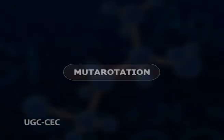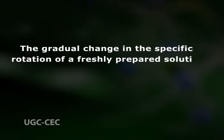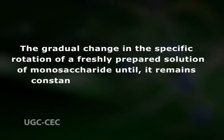Mutarotation was discovered by the French chemist Dubrunfaut in 1846, when he noticed that the specific rotation of an aqueous sugar solution changes with time. Mutarotation is defined as the gradual change in the specific rotation of a freshly prepared solution of a monosaccharide until it remains constant on standing. Thus, mutarotation is a term given to the change in the specific rotation of plane polarized light when it is passed through a solution of an optically active compound. Literally, mutarotation is a change in specific rotation of a chiral compound due to epimerization.